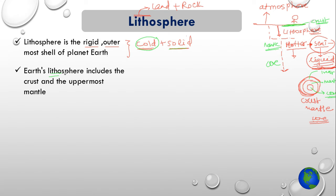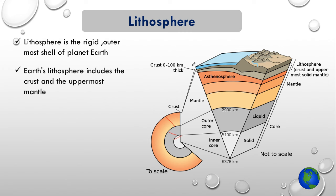Earth's lithosphere includes the crust, which is the topmost layer, and some portion of the mantle. The topmost layer is the crust, which includes oceanic crust and continental crust. Mantle can be divided into upper mantle and lower mantle. The uppermost part of the upper mantle together with the crust forms the lithosphere. Below the lithosphere comes the asthenosphere, which is also part of the upper mantle, and then comes the lower mantle, the outer core, and finally the inner core.